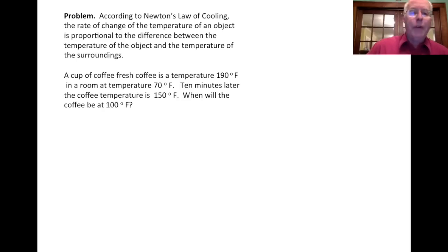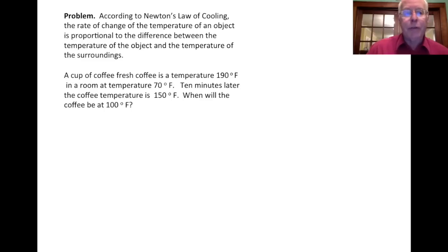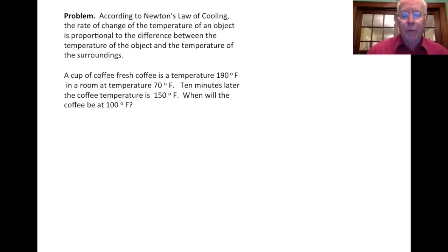So let's imagine we have a coffee cup, and it's poured with fresh coffee that's at a temperature of 190 degrees Fahrenheit. It's sitting in a room whose temperature is 70 degrees. We measure the temperature 10 minutes later, and the coffee is at 150 degrees. The question we're going to answer is: when will the coffee be at 100 degrees Fahrenheit?